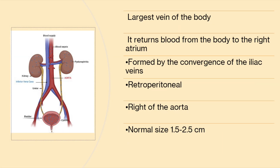IVC is the largest vein of the body and it returns blood from the body to the right atrium. IVC is formed by convergence of the iliac veins. It is a retroperitoneal structure and exists on the right side of the aorta. Normal size is 1.5 to 2.5 cm.